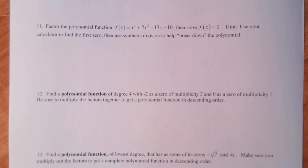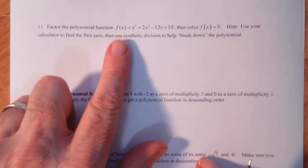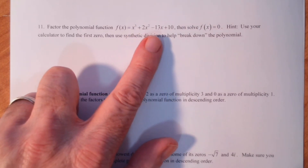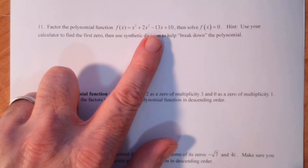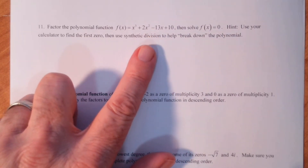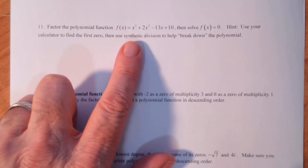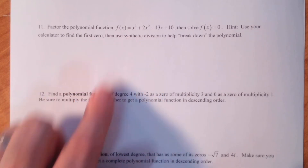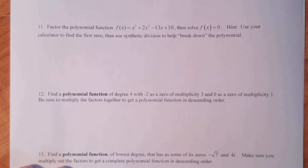We're going to start part two of the test three review. Problem 11 says: factor the polynomial function f of x equals x cubed plus 2x squared minus 13x plus 10, and then solve f of x equals zero. Use your calculator to find the first zero, and then use synthetic division to help break down the polynomial.